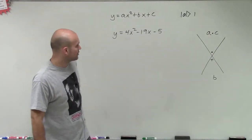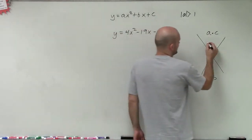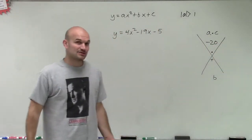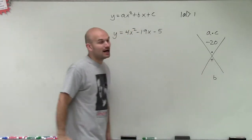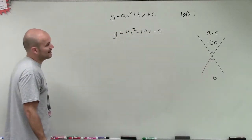So we'll do 4 times negative 5, which is going to be negative 20. Therefore, now I'm going to look at the factors of negative 20 and determine, out of those factors, which ones add up to negative 19.